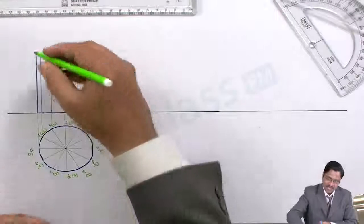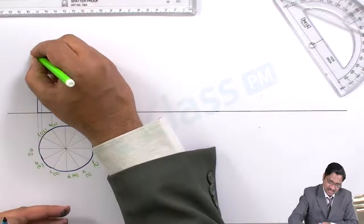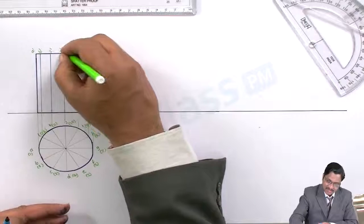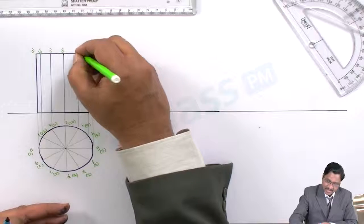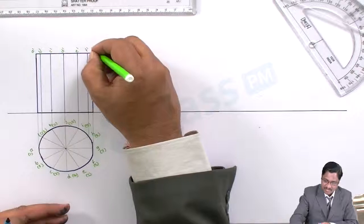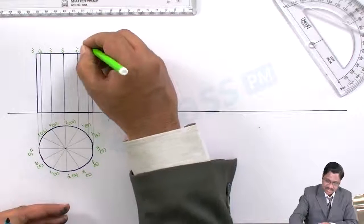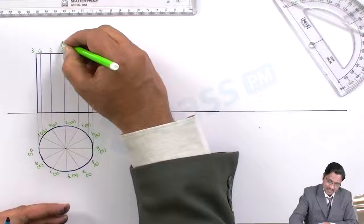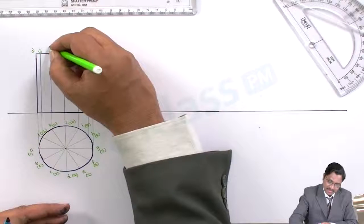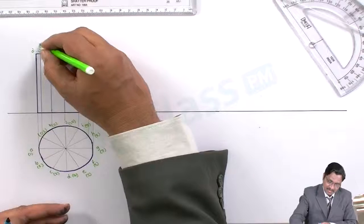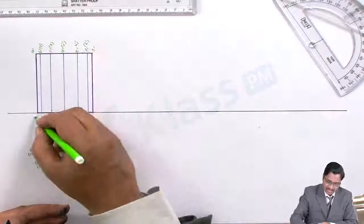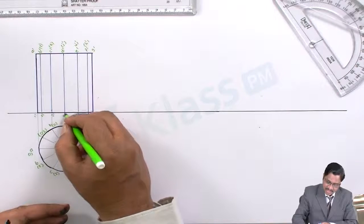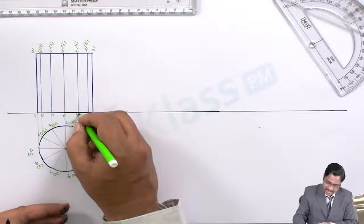As in the earlier case, label every corner. So A dash, B, C, D, E, F, G, H, I, J, K, L on the top, and similarly on the bottom side: 1, 2 — complete all the numberings.